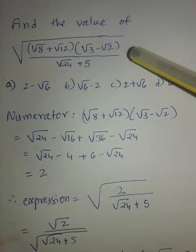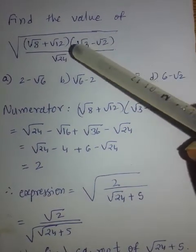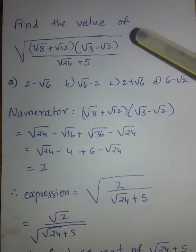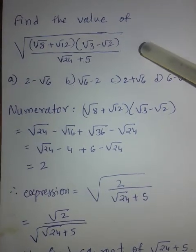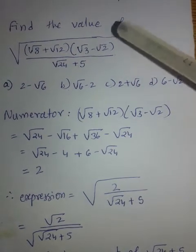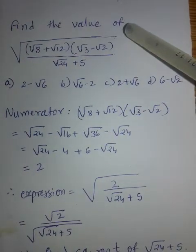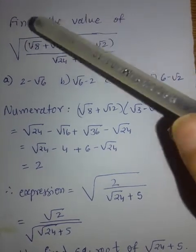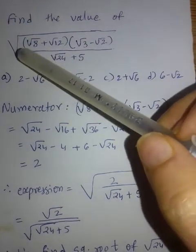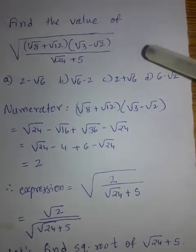Find the value of this expression — four options A, B, C, D are given. You need to simplify this expression. We will go step by step: first we will take care of the numerator, then the denominator, and then we will find the square root in the latter part. That will make the example very easy.